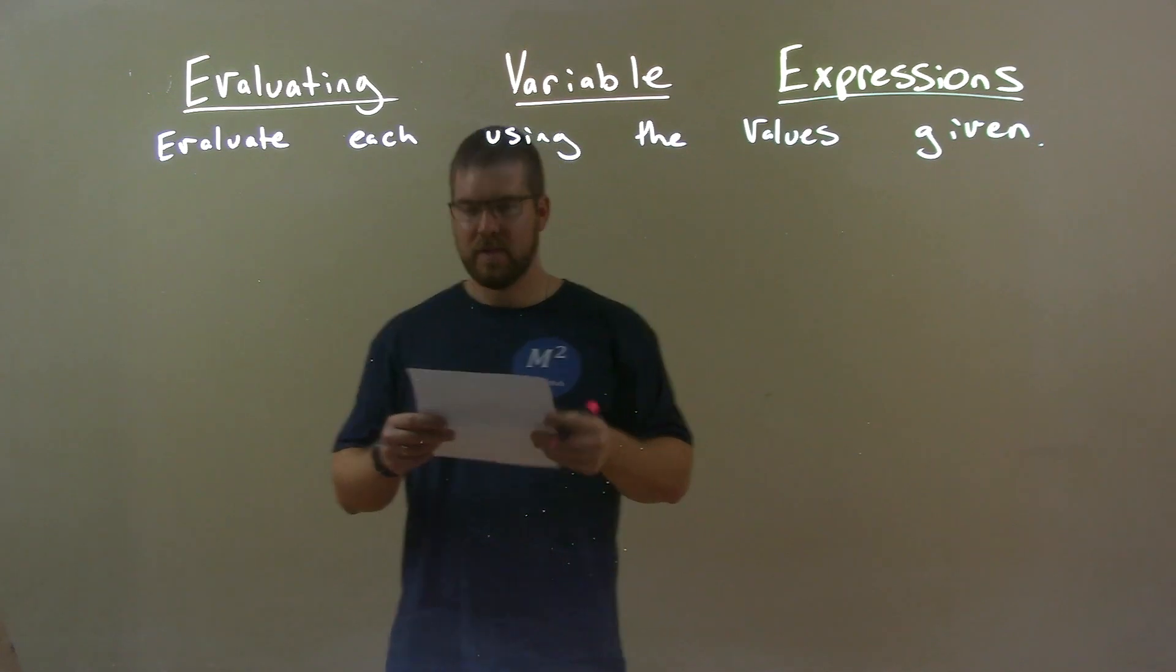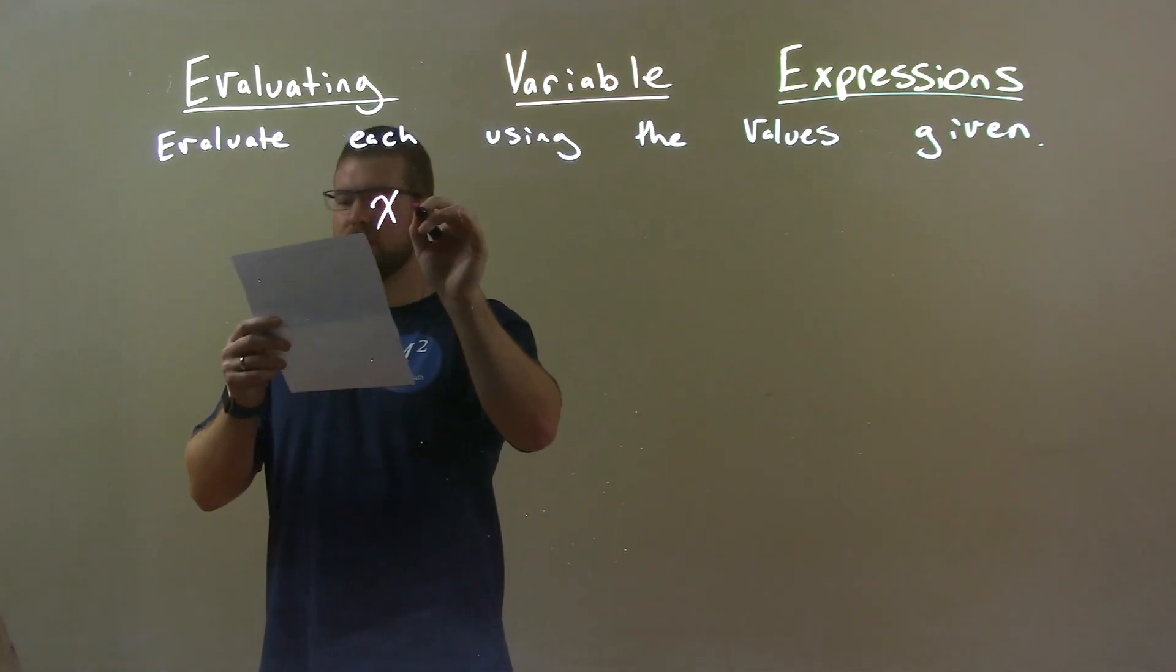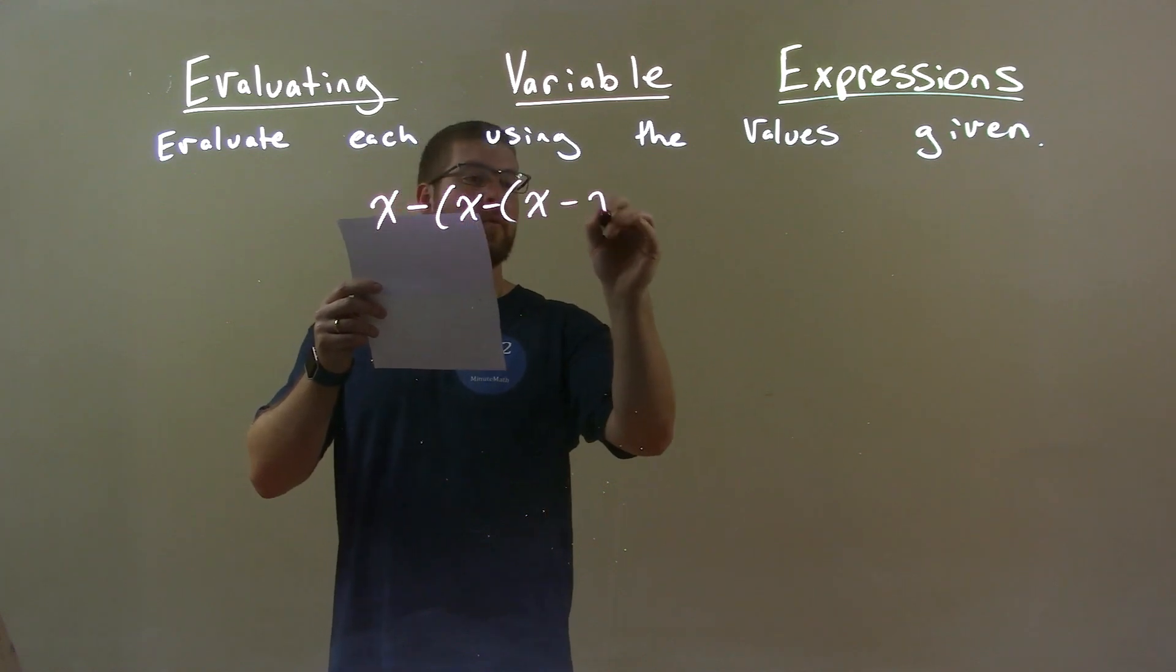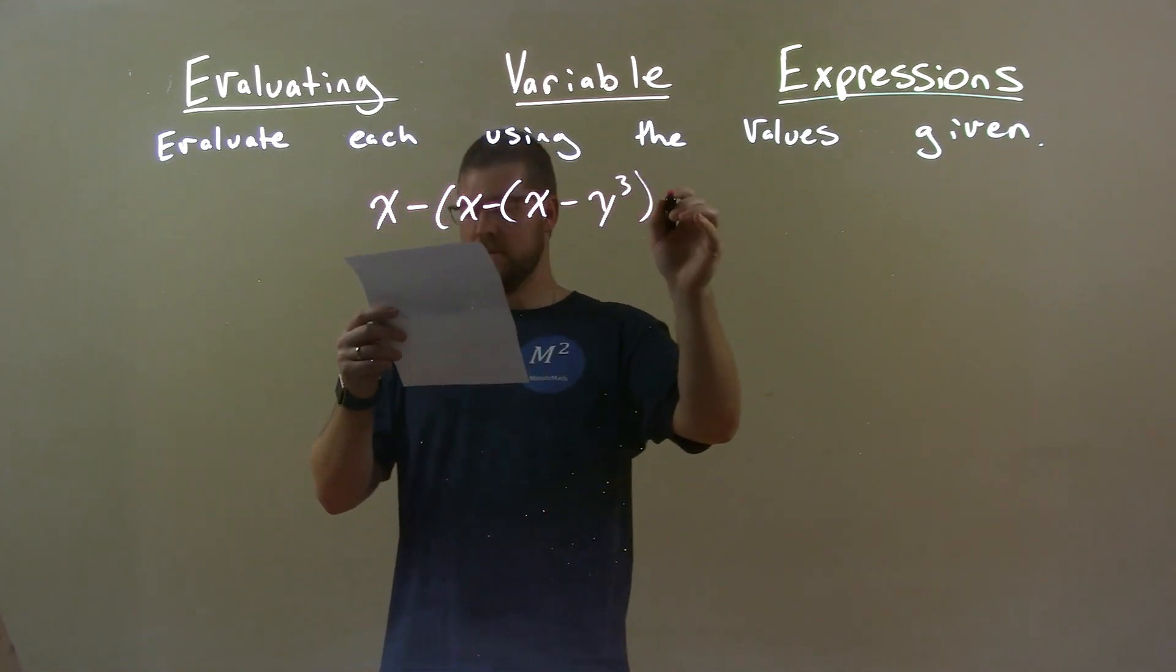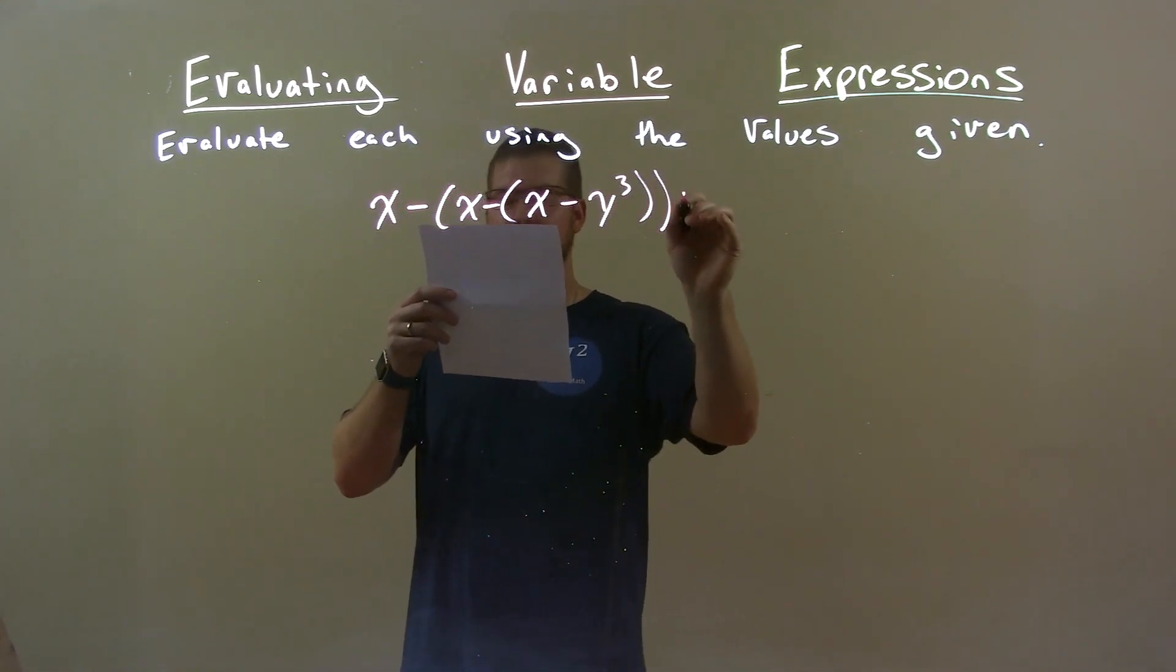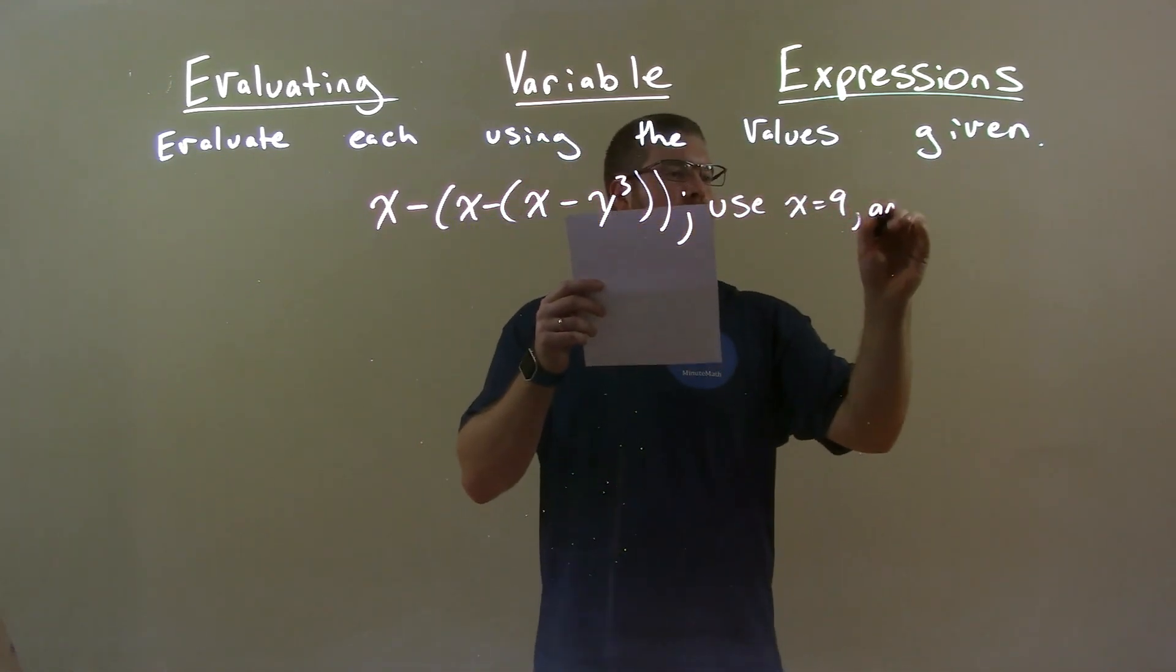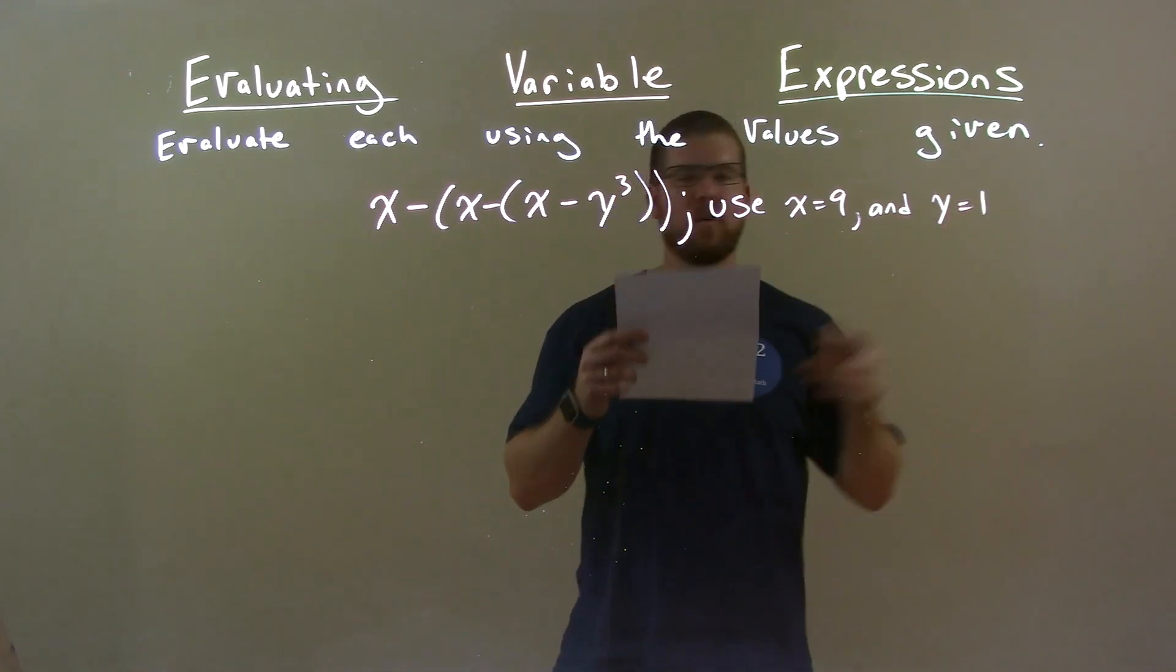So if I was given this expression: x minus x minus x minus y to the third power. Make sure my parentheses are there. And we're using x to be 9 and y to be 1.